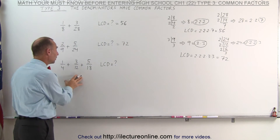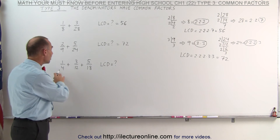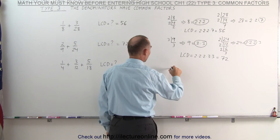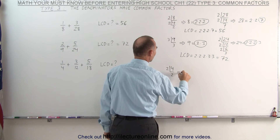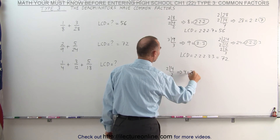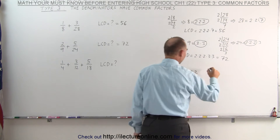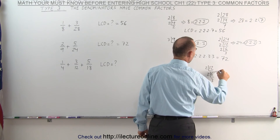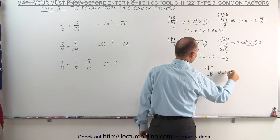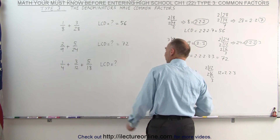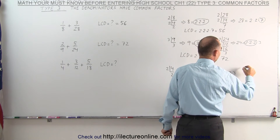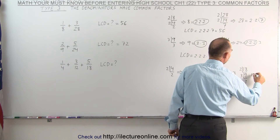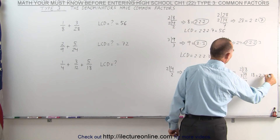Here we have 3 fractions, but again we do the exact same thing. We write each of the denominators as a product of its factors. We take the number 4, divide that by 2, we get 2, which means 4 is equal to 2 times 2. The denominator 12 could be divided by 2 to get 6, divided by 2 to get 3, which means 12 is equal to 2 times 2 times 3. And finally the last denominator, 18, divided by 2 gives us 9, divided by 3 gives us 3, or 18 can be written as 2 times 3 times 3.